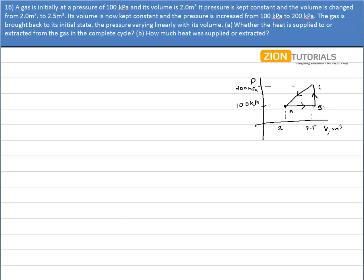We have to calculate whether the heat is supplied to or extracted from the gas in the complete cycle. Now first of all, the change in internal energy will be equal to 0 because it is the condition for the cyclic process.